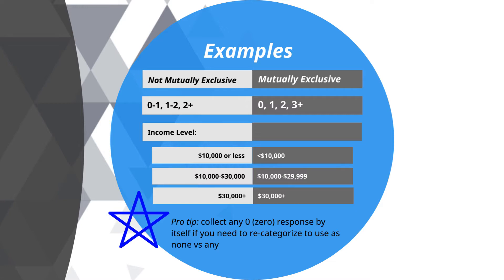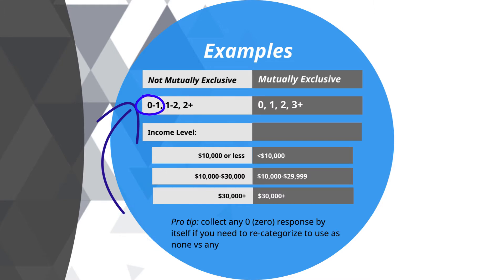It's often really important to collect zero or none separately, because if you need to compare none versus some, you cannot do that when 0 and 1 are collected together. It doesn't impair data capture to have one extra category of zero, and then you could have one to two, three to five, six or more. Keep that in mind when collecting frequency of times.